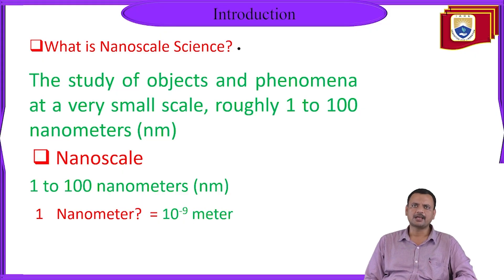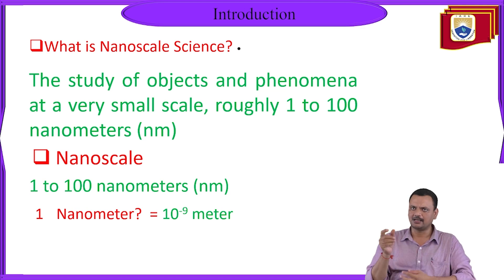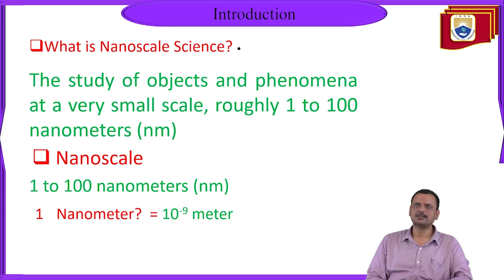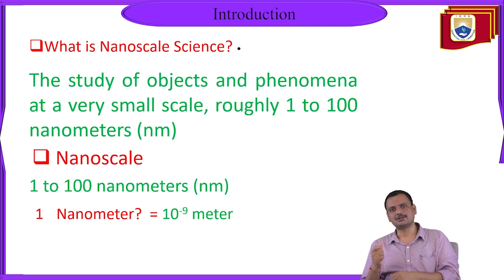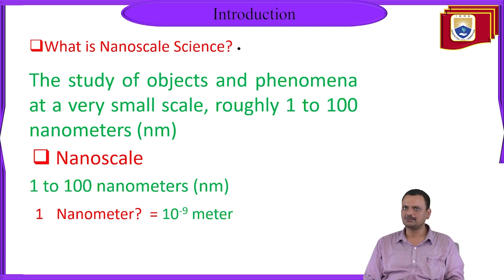What do we mean by nanoscale, or nanoscale science, or nanotechnology? Nanoscale science is the study of objects and phenomena at a very small scale — roughly 1 to 100 nanometers. Once you prepare any material with a dimension in that range, you can say that material is in the nano region, and it is a nanomaterial.